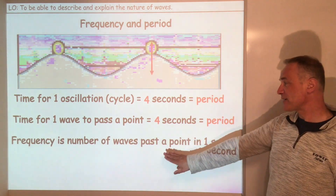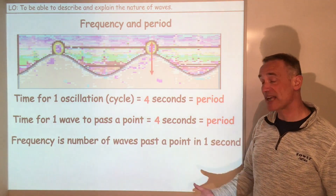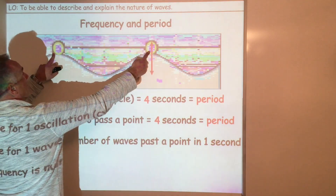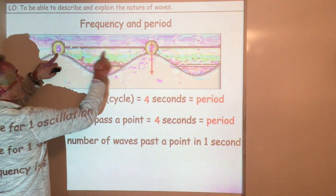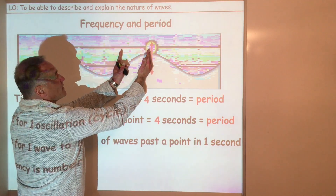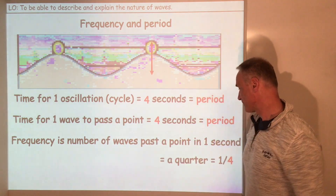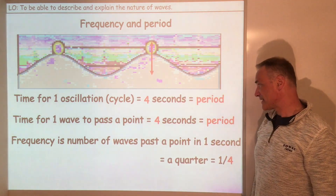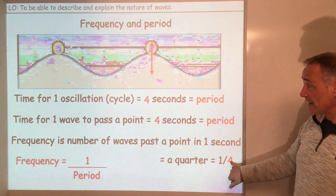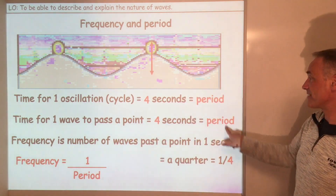We know frequency is the number of waves past a point every second. That took four seconds, so how many waves do we get past a point in a second? Only a quarter. One over four is a quarter — and so frequency is actually one divided by the period.